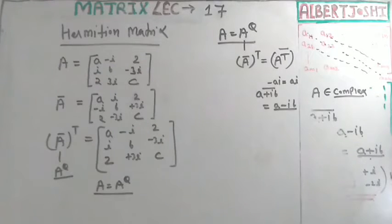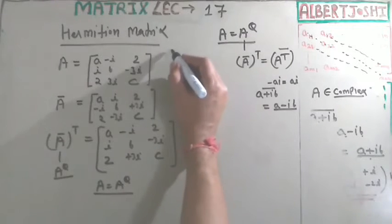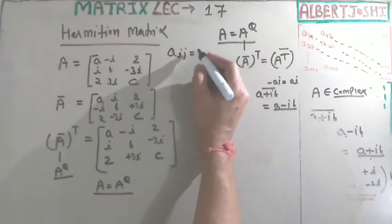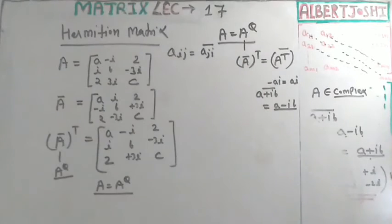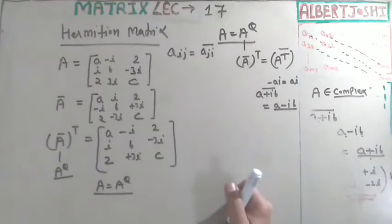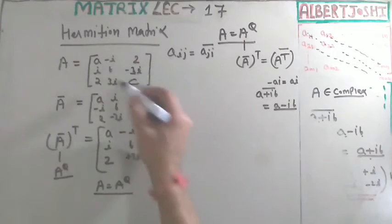Now the general method: whenever a_ij equals the conjugate of a_ji (written as ā_ji) for all i and j, you can say that this is a Hermitian matrix.